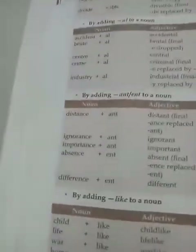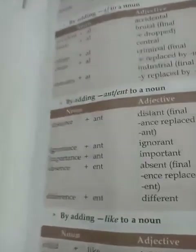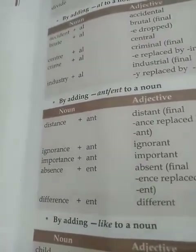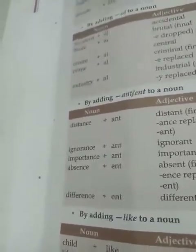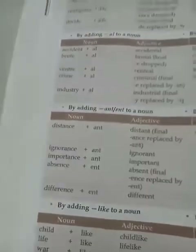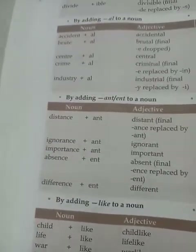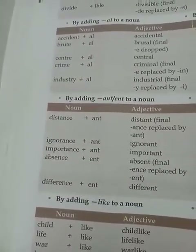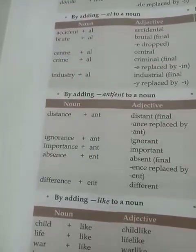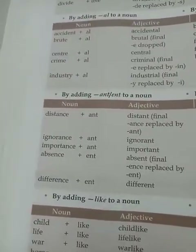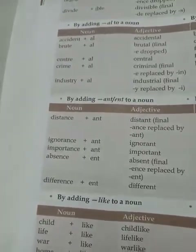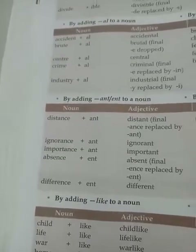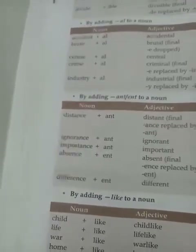By adding ANT or ENT to a noun: DISTANCE plus ANT becomes DISTANT; IGNORANCE plus ANT becomes IGNORANT; DIFFERENCE plus ENT becomes DIFFERENT.